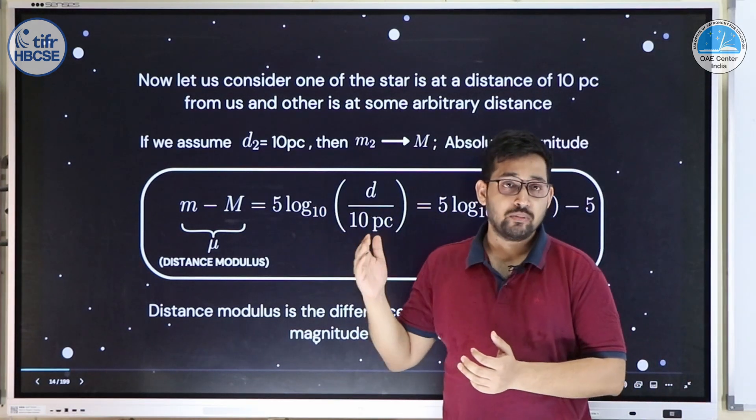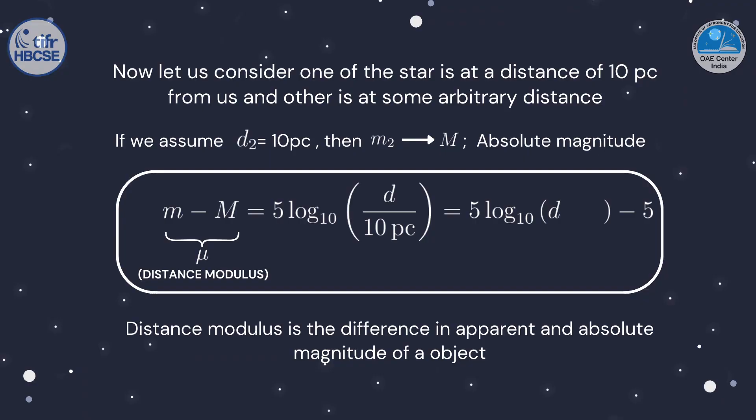Now consider the same star at two distances, one of which is 10 parsecs. The magnitude at 10 parsecs is the absolute magnitude M. The equation becomes: m − M = 5 × log₁₀(d/10 parsec), where d is in parsecs. This quantity, m − M, is called the distance modulus, as it measures how far the star is. It is critical that d be in parsecs, since the argument of the logarithm must be dimensionless.